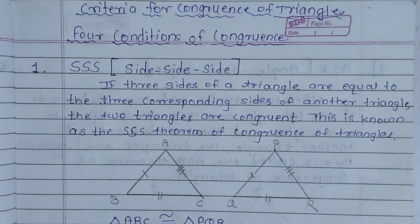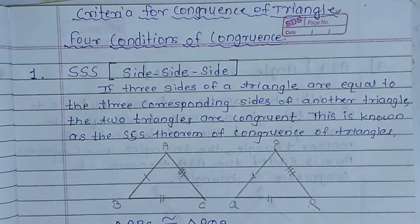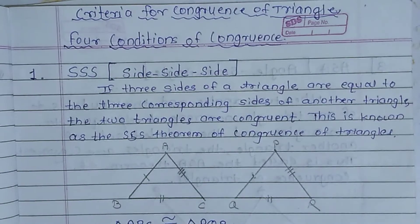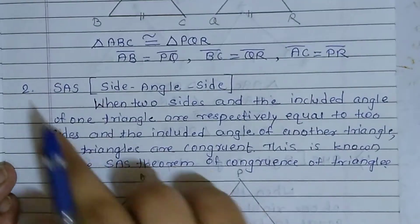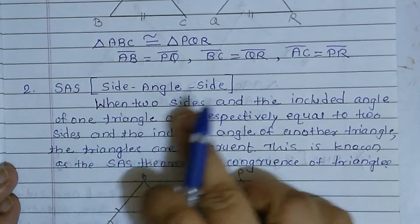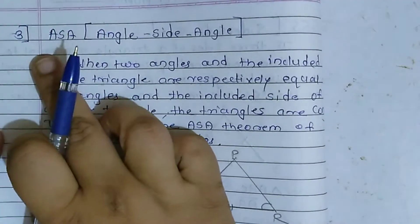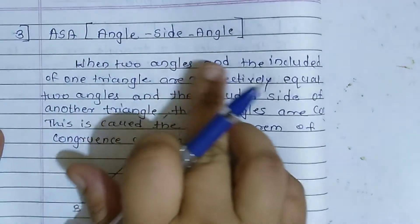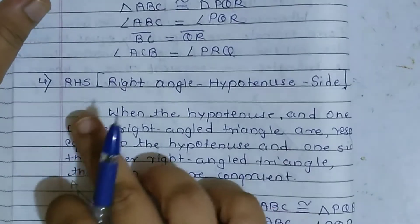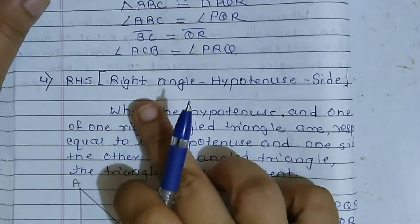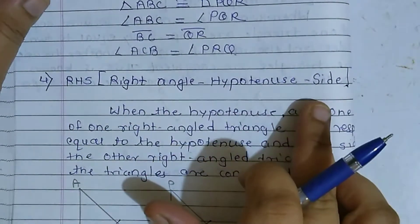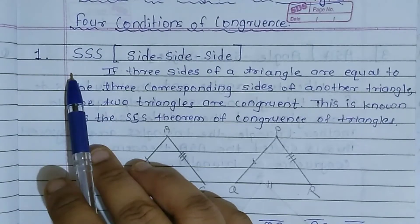In the previous video we solved exercise 7.1, and in this lecture we are going to learn the criteria for congruence of triangles — meaning 4 conditions of congruence. There are total 4 conditions: SSS (side-side-side), SAS (side-angle-side), ASA (angle-side-angle), and RHS (right angle-hypotenuse-side).